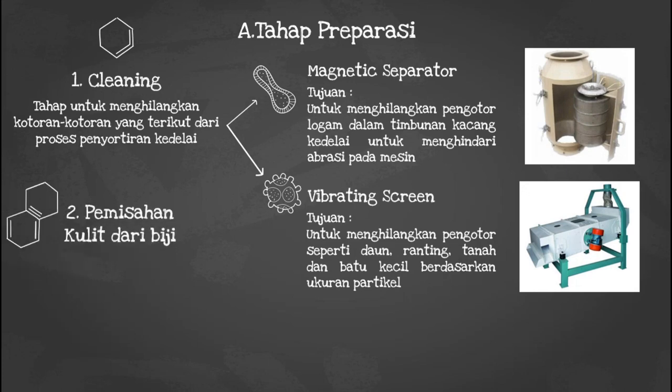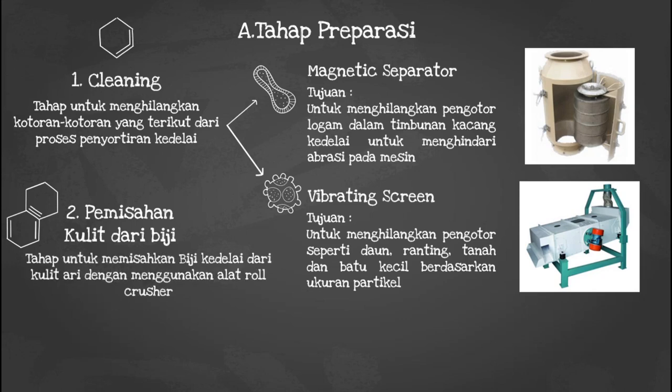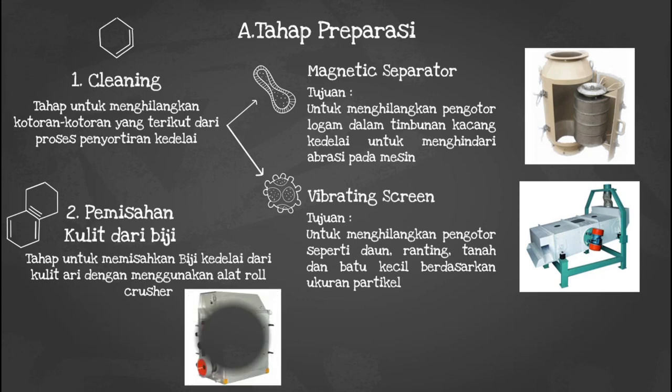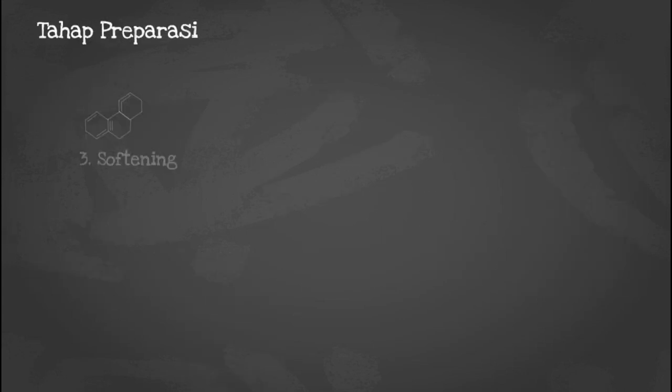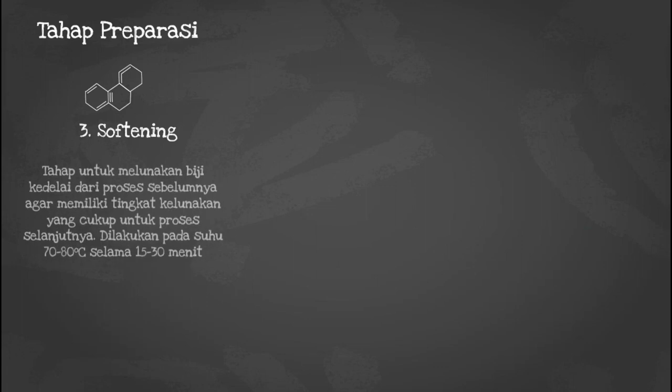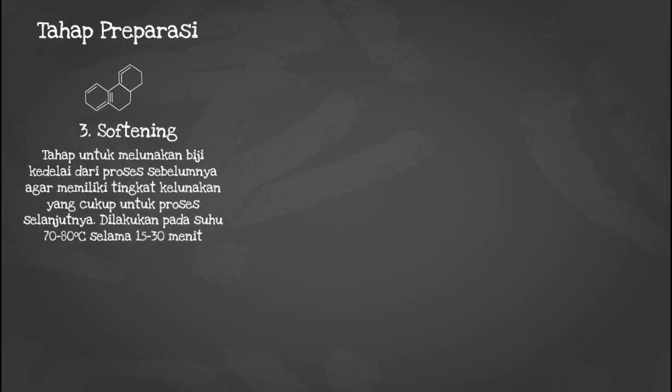Tahap preparasi yang kedua adalah pemisahan kulit dari biji, yang bertujuan untuk memisahkan biji kedelai dari kulit ari dengan menggunakan alat yang disebut roll crusher. Tahap yang ketiga adalah softening atau pelunakan, untuk melunakan biji kedelai dari proses sebelumnya agar memiliki tingkat kelunakan yang cukup untuk proses selanjutnya. Proses ini dilakukan pada suhu 70 hingga 80 derajat Celsius selama 15 hingga 30 menit.